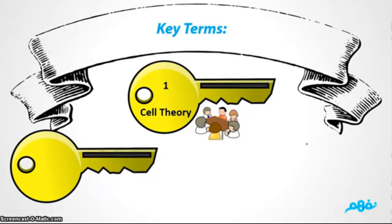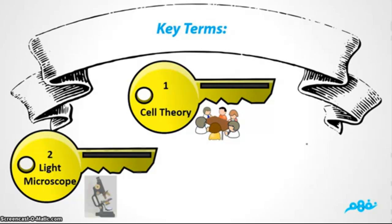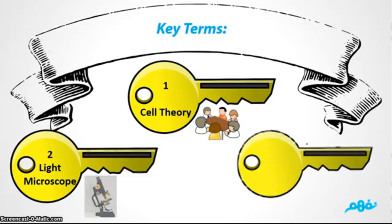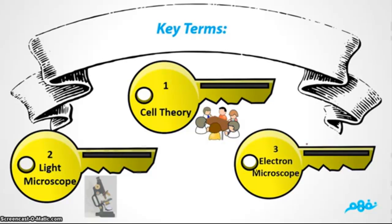The second and third words are types of microscopes. Number two is the light microscope — maybe you have seen it in your science lab at school. The third one is the electron microscope, which is huge and used by scientists.